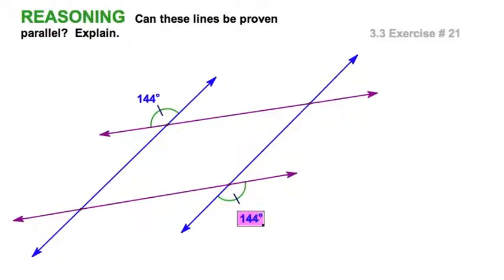Well, I've got a pair of 144 degree angles. That tells me I've got two congruent angles here. Do I have a pair of parallel lines? I don't know. Either one. The blue or the purple.